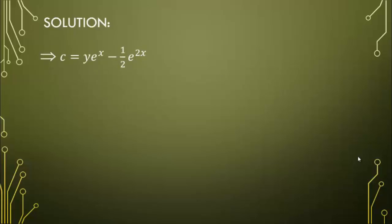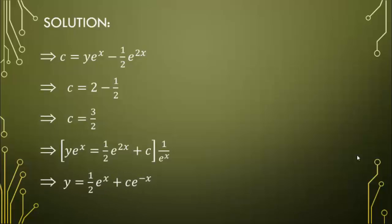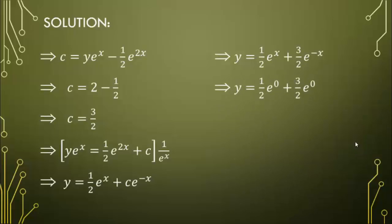Therefore, C = y·eˣ − ½ e²ˣ. We substitute x = 0 and y = 2, so C = 2 − ½ = 3/2. Dividing the whole equation by eˣ gives y = ½ eˣ + C e⁻ˣ. Substituting C = 3/2, the equation becomes y = ½ eˣ + 3/2 e⁻ˣ. Substituting x = 0 confirms y = ½ + 3/2 = 2, verifying the initial condition.